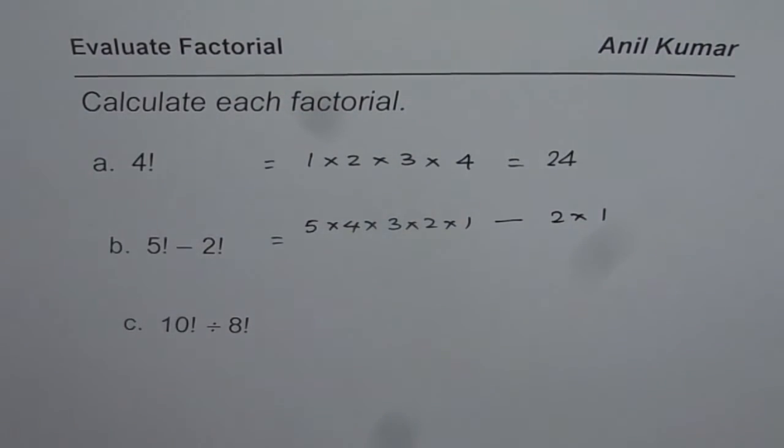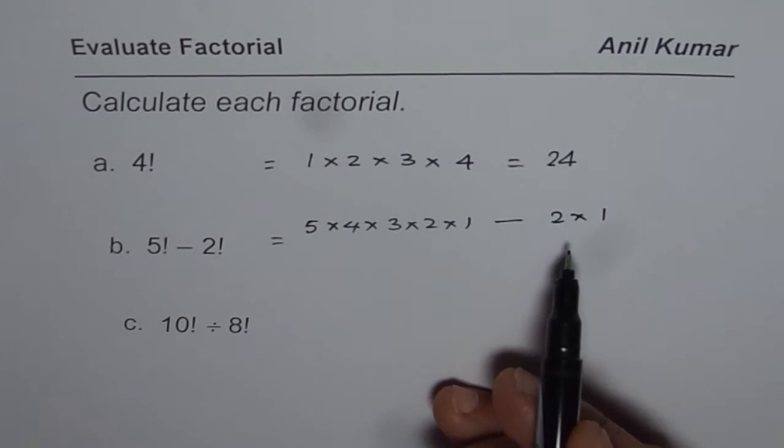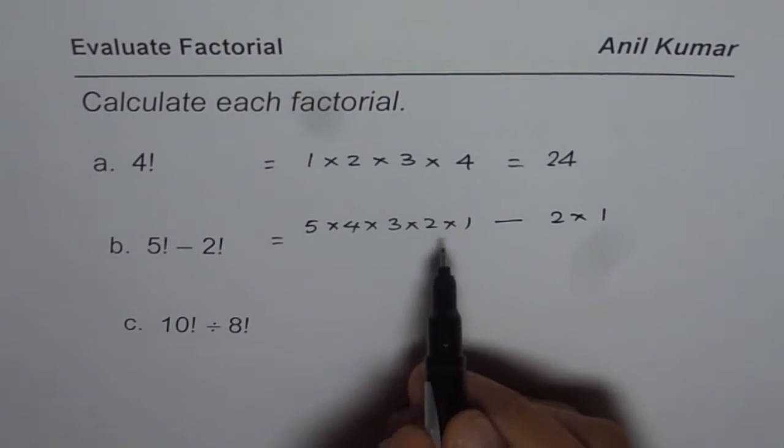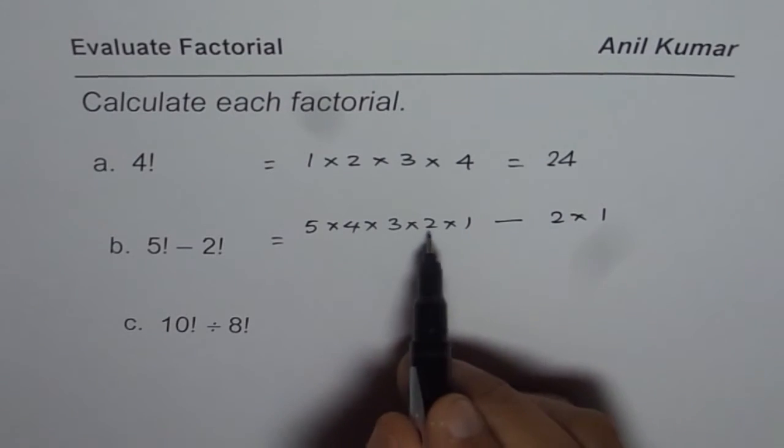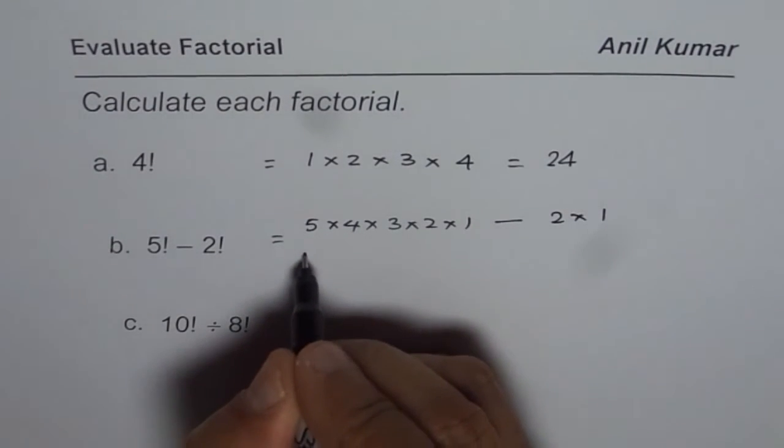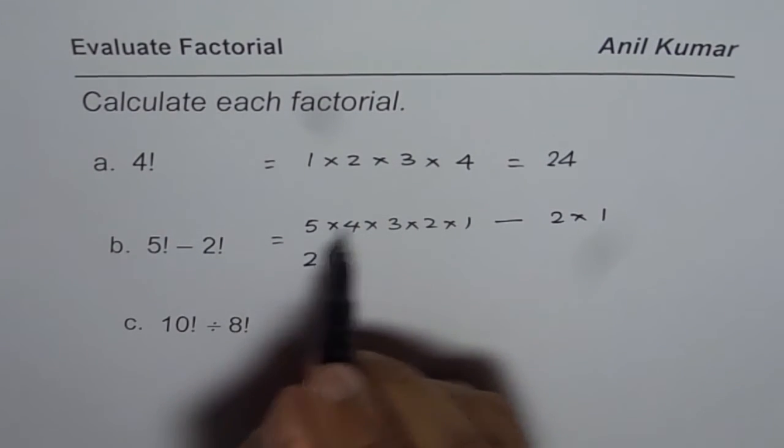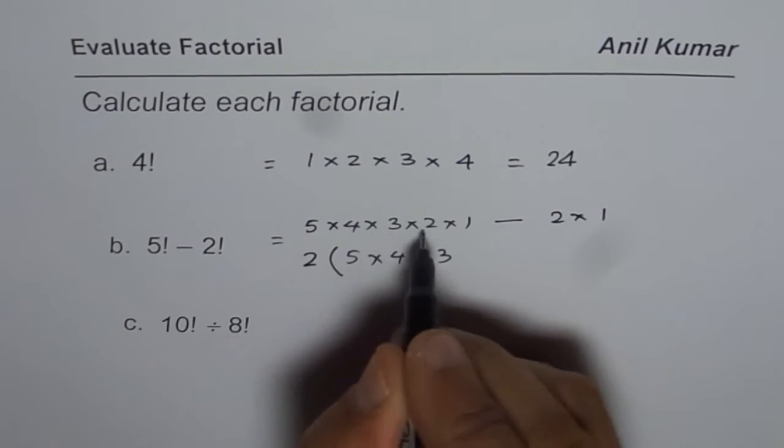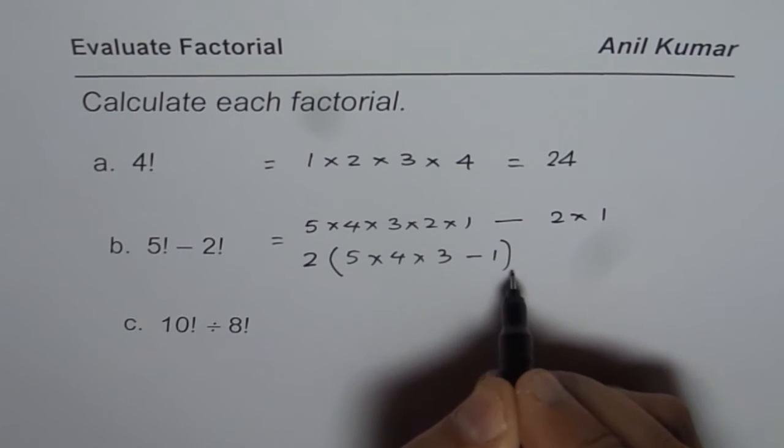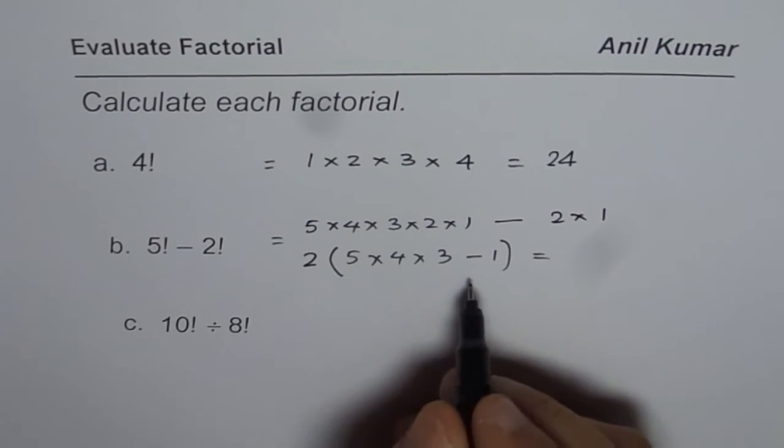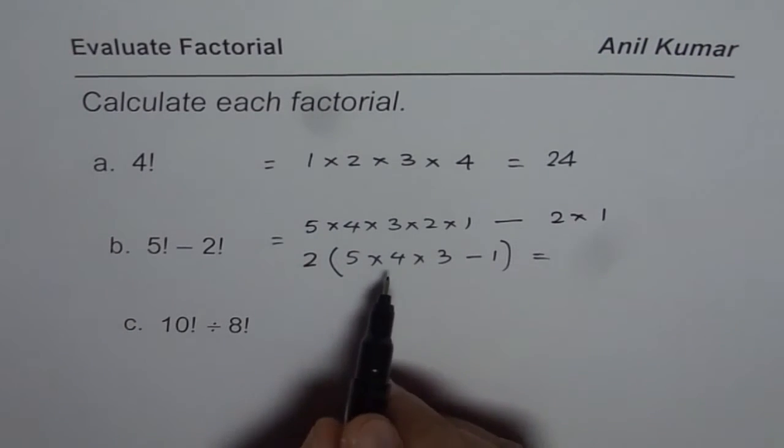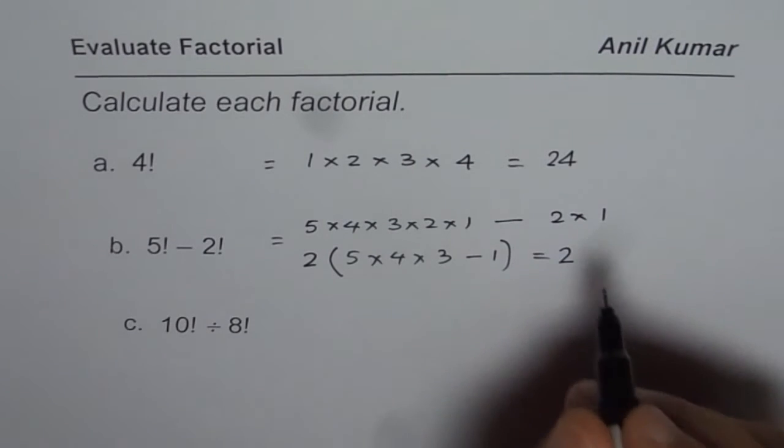So you could multiply, use calculator, find the answer. You could also do like this: you can take 2 times 1 which is 2 as a common factor. So you take 2 as a common factor, you are left with 5 times 4 times 3 minus 1. This is a technique which will help you solve a bit complicated questions. So I will explore this one, of course you will get the same answer.